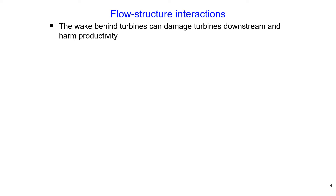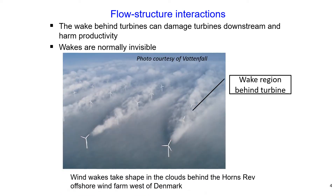The wakes behind turbines can damage turbines installed downstream and also reduce their productivity. Usually wakes are not visible; however, in some conditions they may be visible, for example as seen at this offshore wind farm west of Denmark.